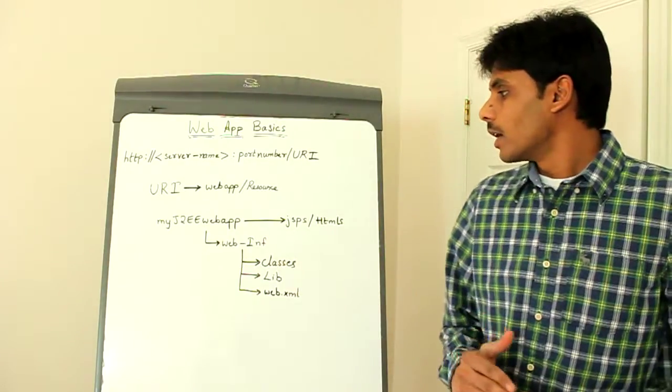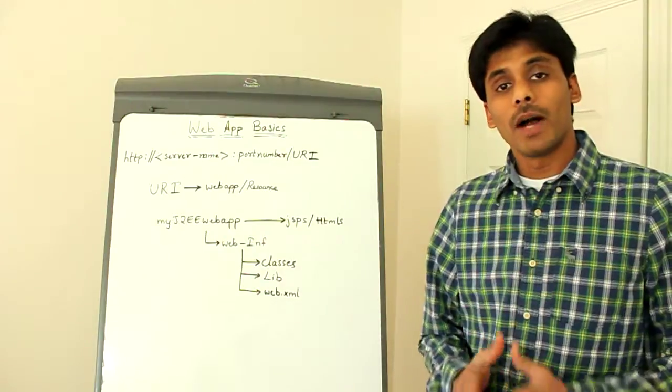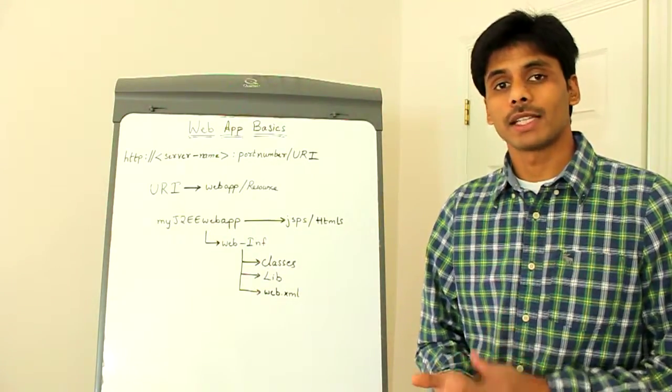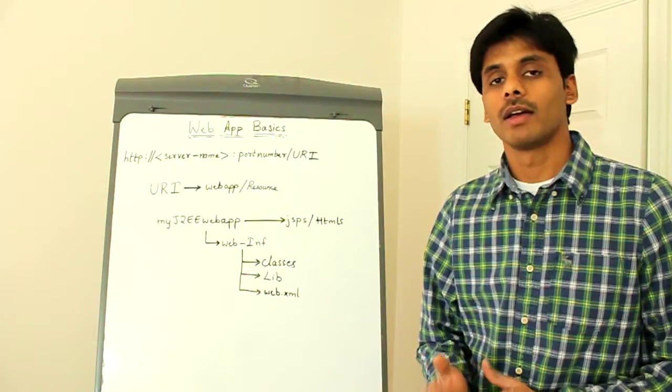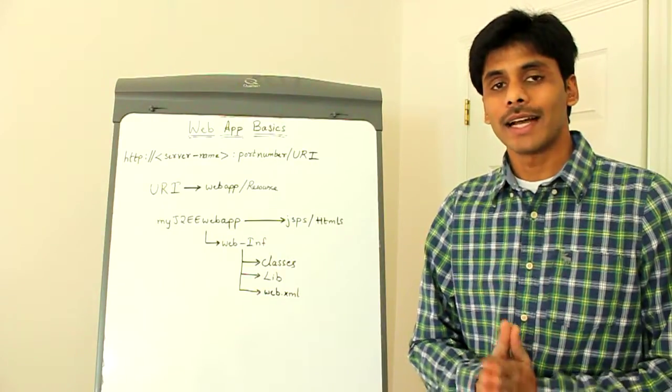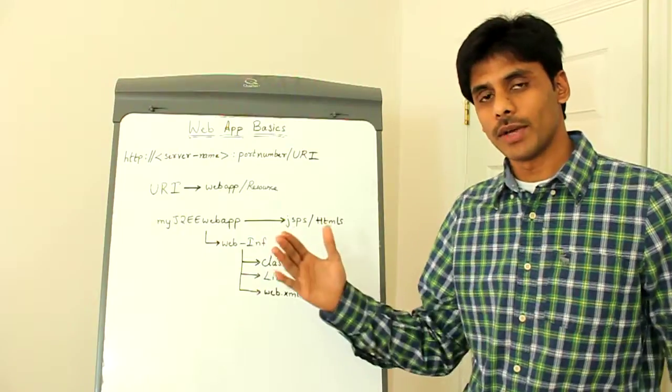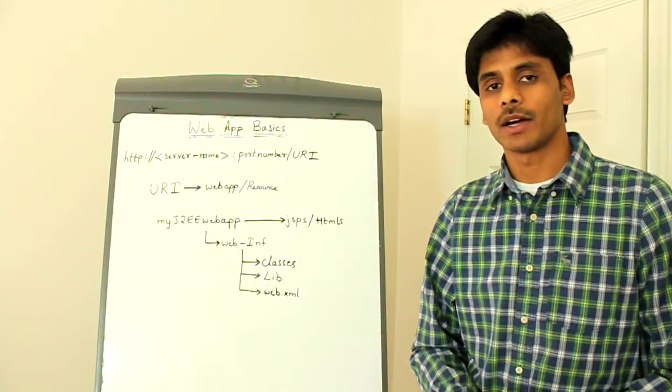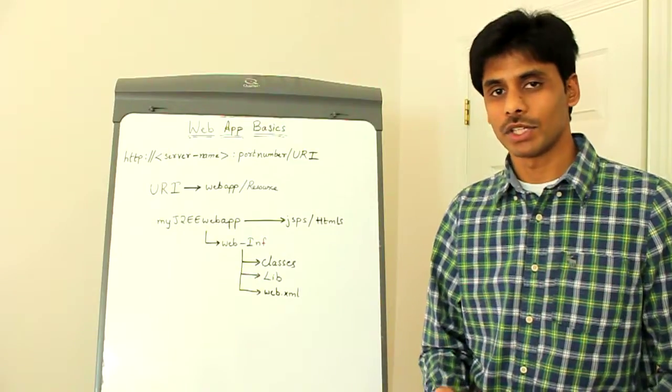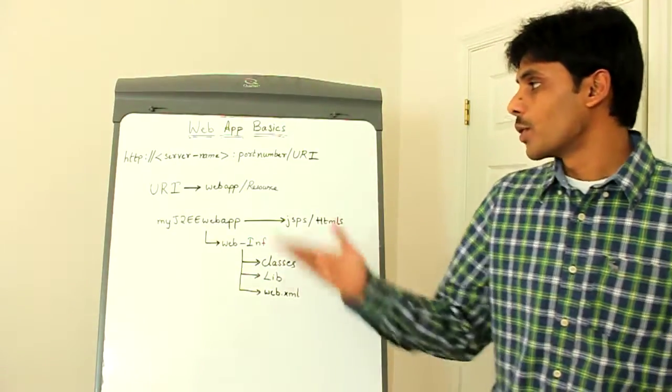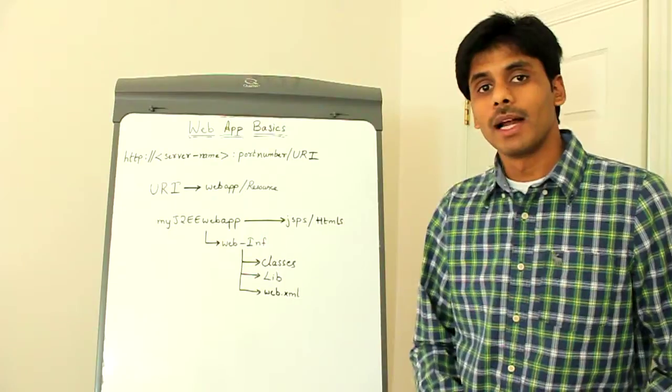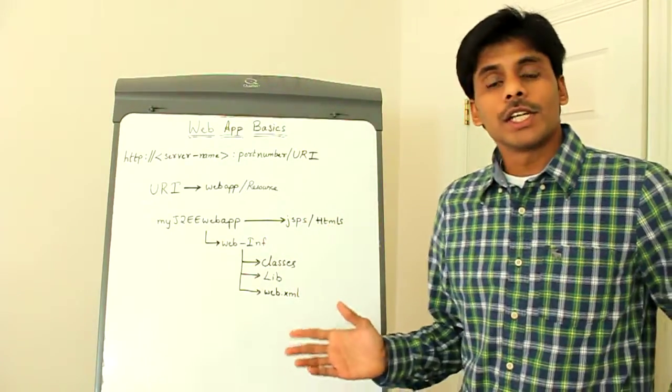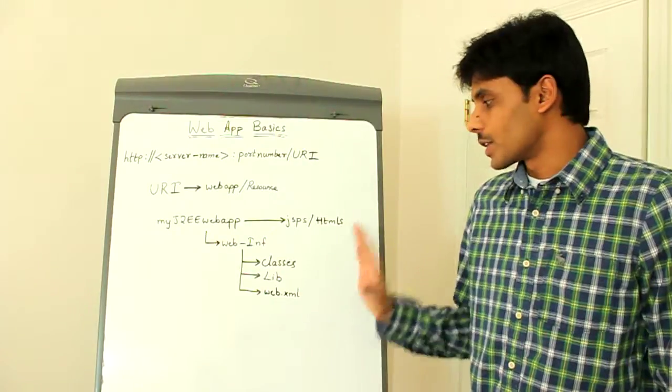To summarize, you now know what a web application is. The web application is something which takes a HTTP request and serves a HTTP response back. The content that goes into a HTTP request and HTTP response is always HTML no matter in which language your web application is written in. You also know the various components that build a URL. And you also know the J2EE web application folder structure.